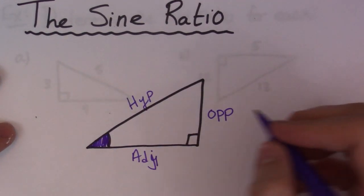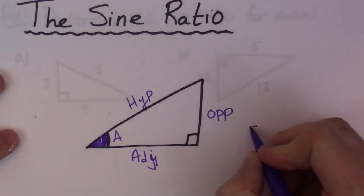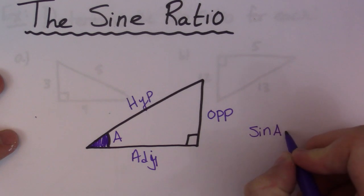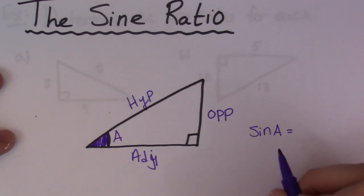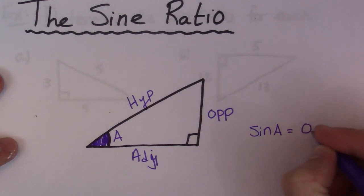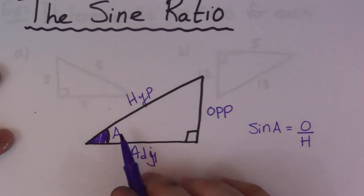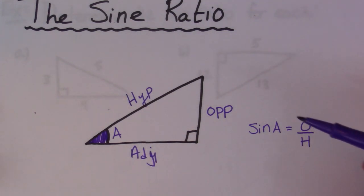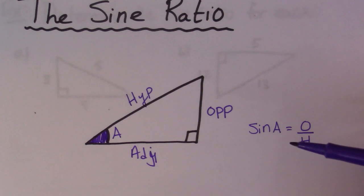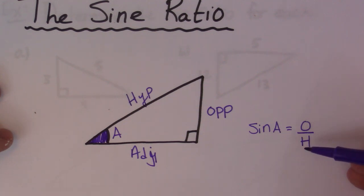So the sine ratio — I'm just going to call this angle A. The sine ratio is the sine of angle A. I say sine of A is equal to opposite over hypotenuse, so O over H. Sine is the ratio of the opposite side of a right triangle to the hypotenuse side. That's all it is — that is what it's defined as.